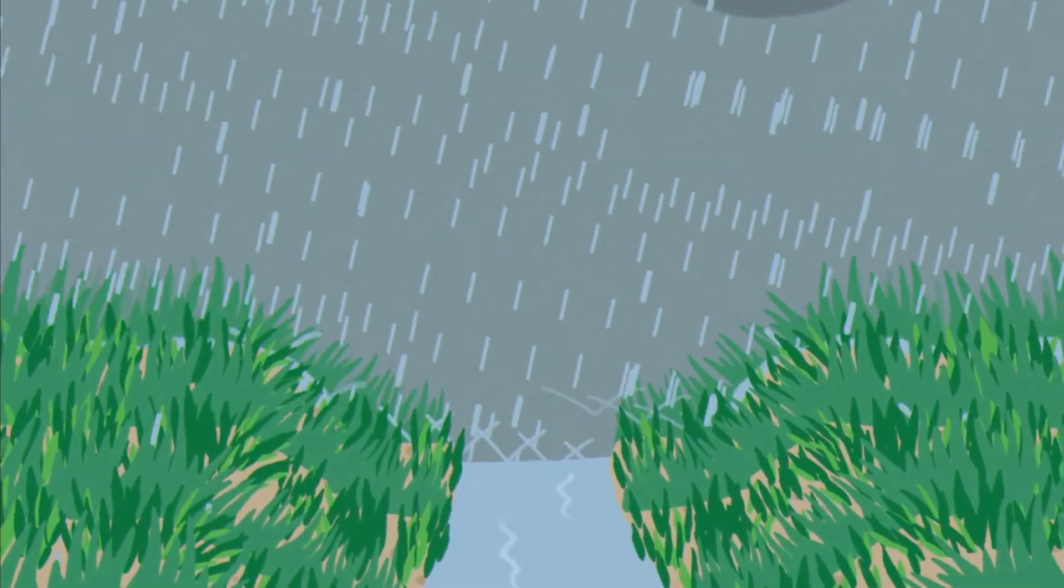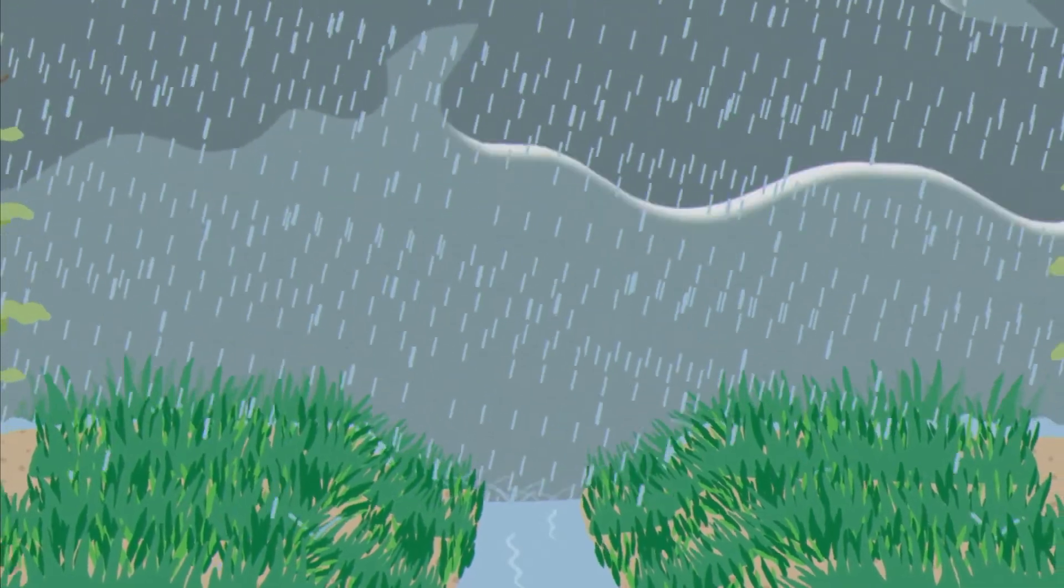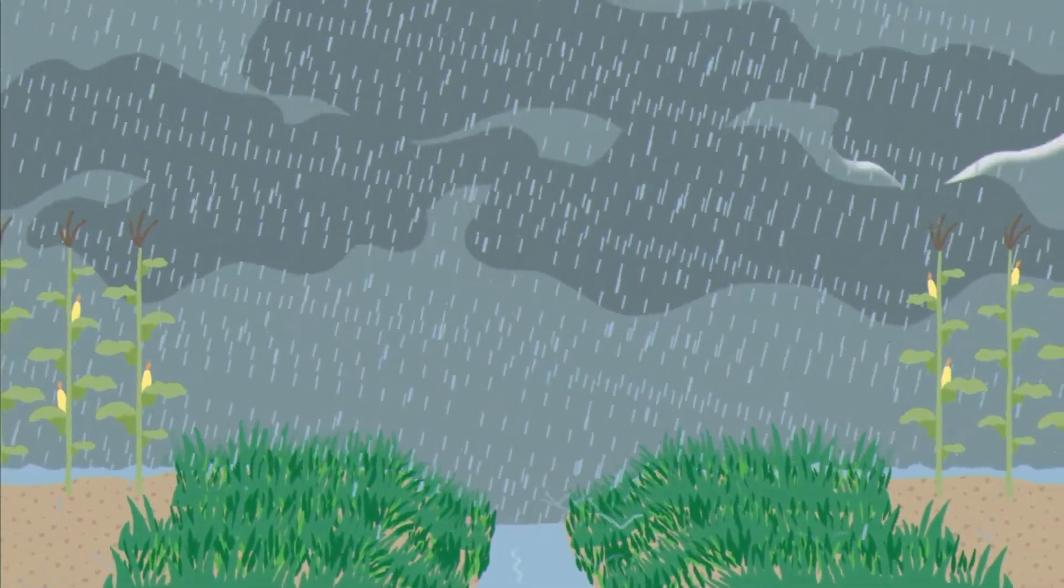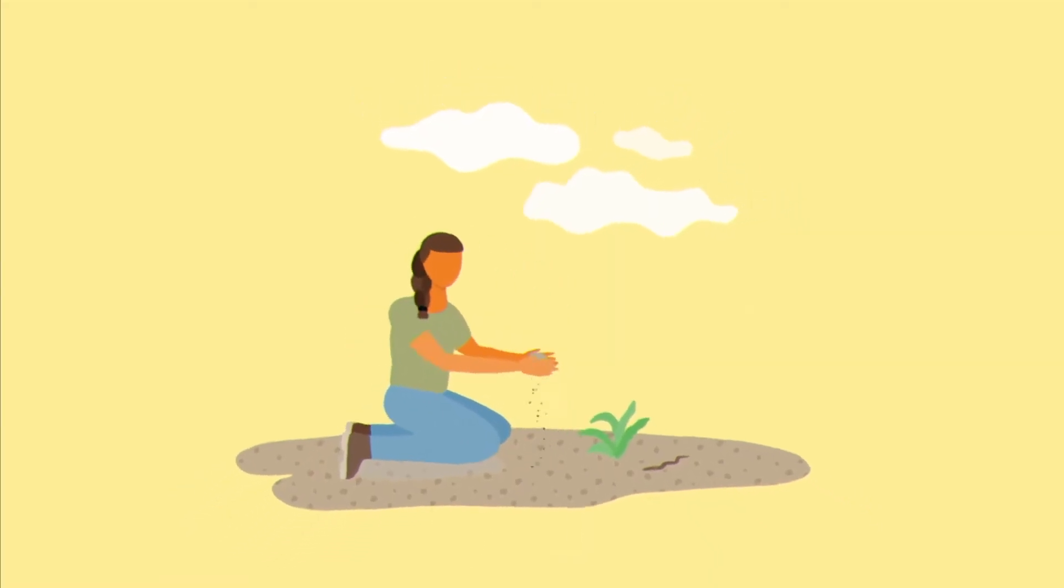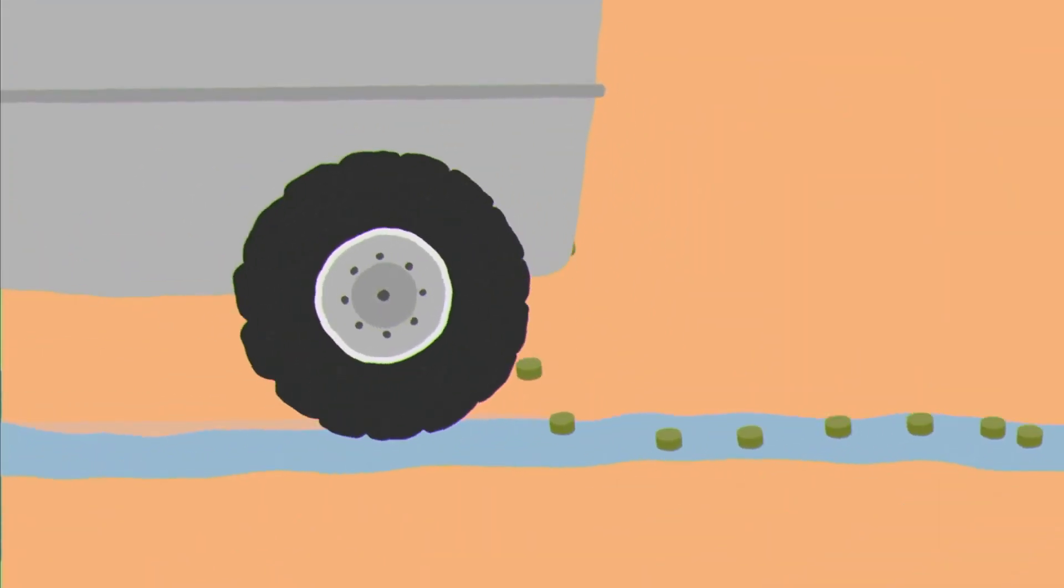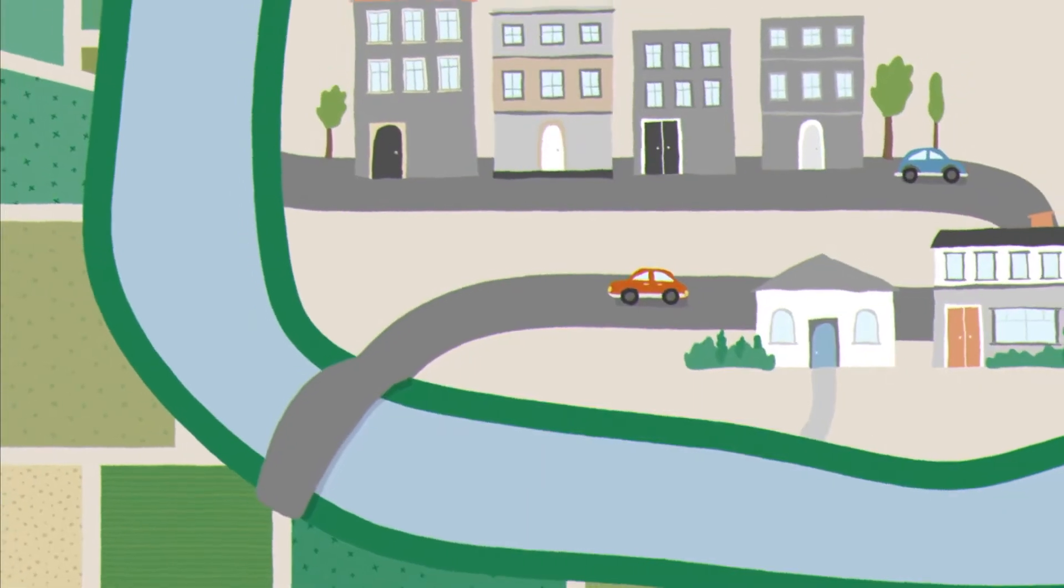Buffer strips or filter strips are an important tool the agricultural industry can use to protect water resources by reducing the amount of nutrients and sediment we lose off our land. Soil is extremely valuable and we spend a lot of money on nutrient application. The last thing we want is for soil and nutrients to wash downstream, impacting drinking water and water resources our communities rely on.